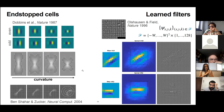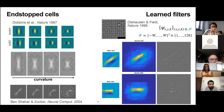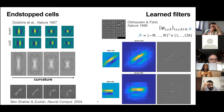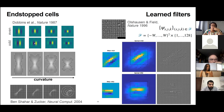We also computed the connectivity pattern induced by a family of end-stopped profiles with antagonistic end zones that suppress the response to stimuli longer than the central lobe. These cells have been shown to react to curved stimuli, and previous work has analyzed the relationship between the length of the filter and the curvature of the stimuli. We considered different families of end-stopped cells with different lengths, and obtained curved association fields with increasing curvature with decreasing filter length, consistently with previous findings.